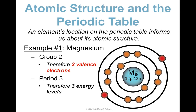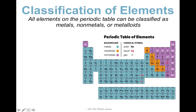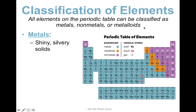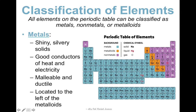One last thing before we learn to draw is the classification of elements. All elements on the periodic table are classified as either metals, non-metals, or metalloids. Metals — shown in teal on my periodic table — are shiny silvery solids, really good conductors of heat and electricity, and malleable and ductile. They tend to be located to the left of the metalloids. The elements shown at the bottom of the table — the lanthanides and actinides — actually fit into that section; we won't get into those this year.